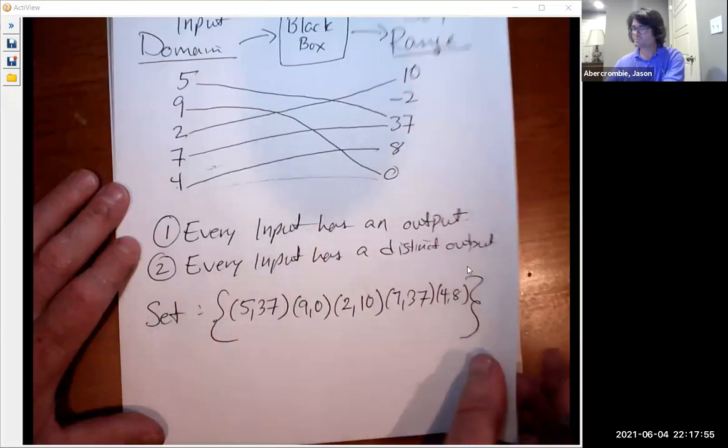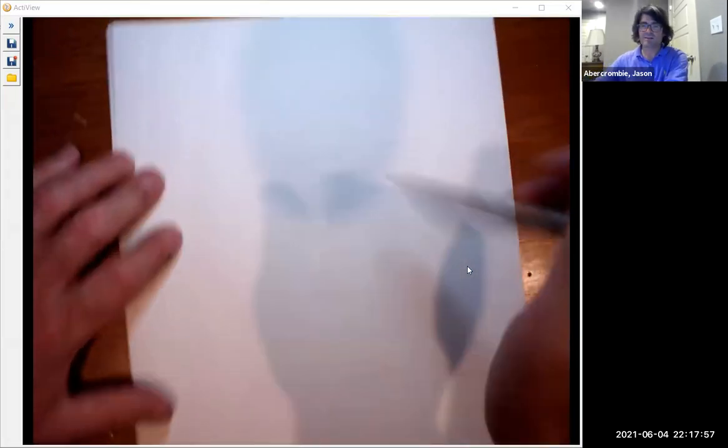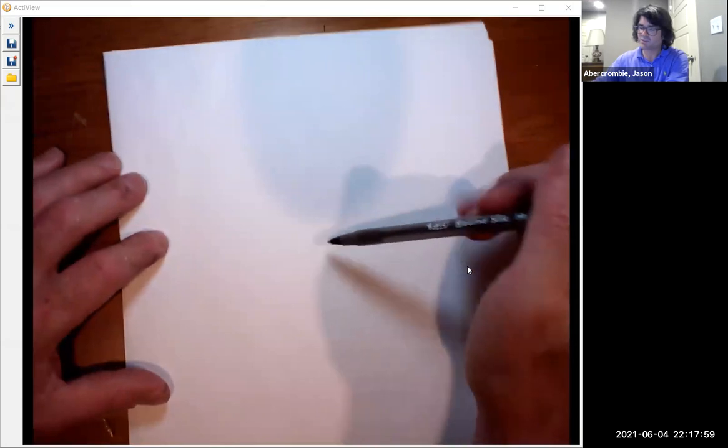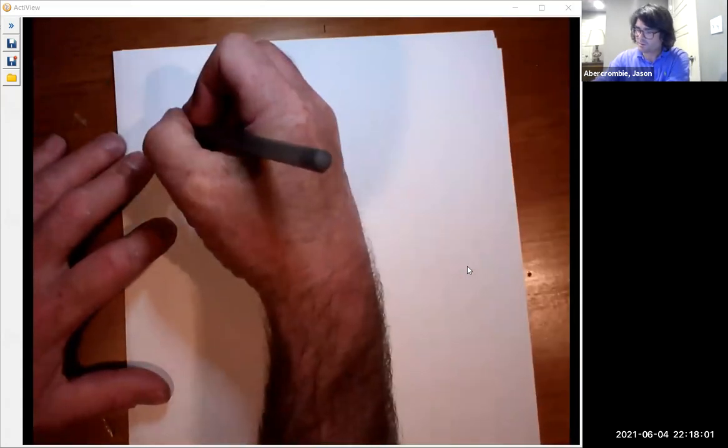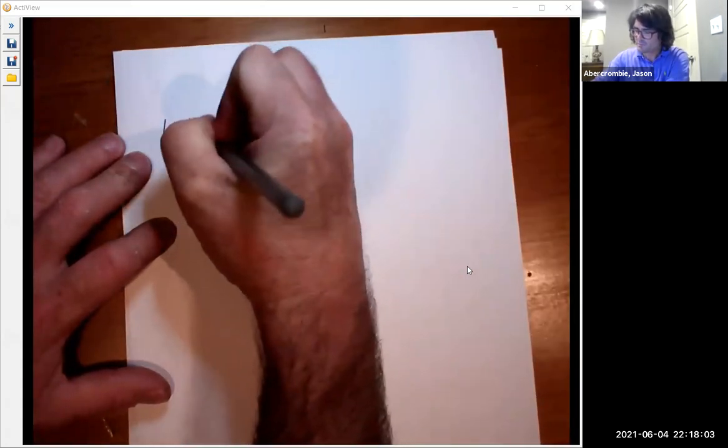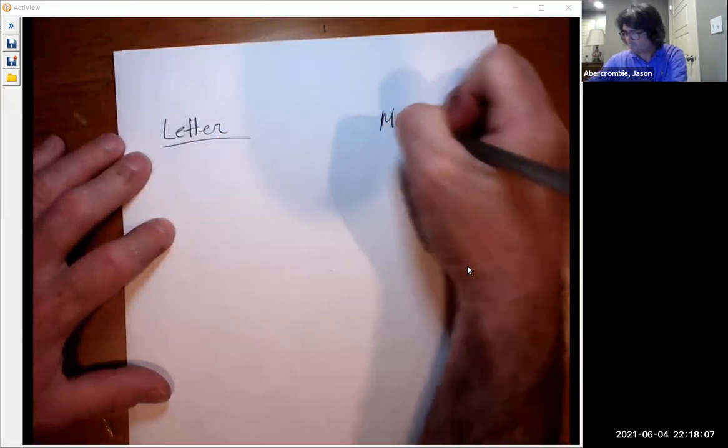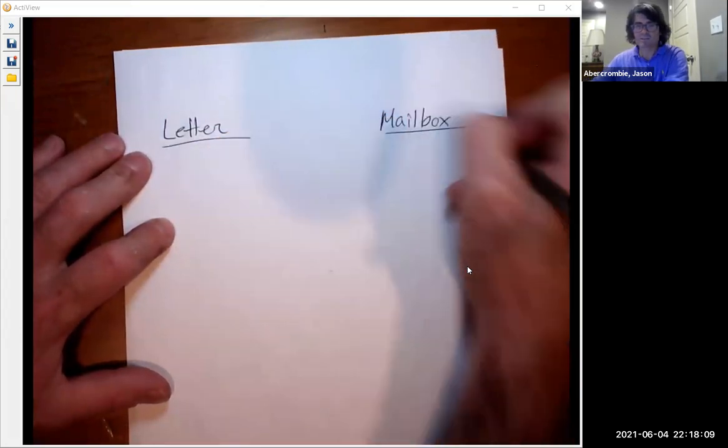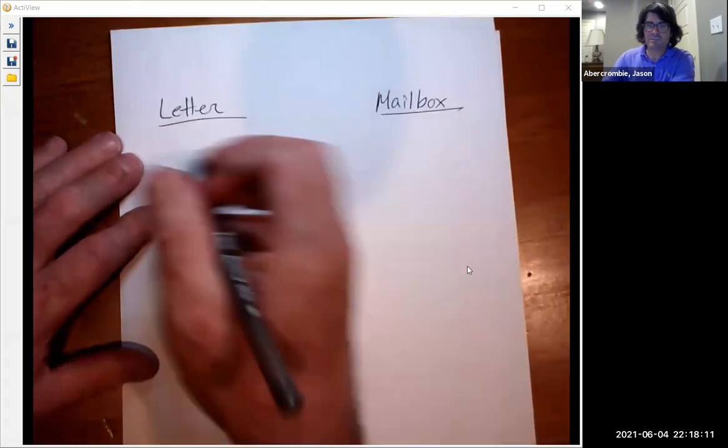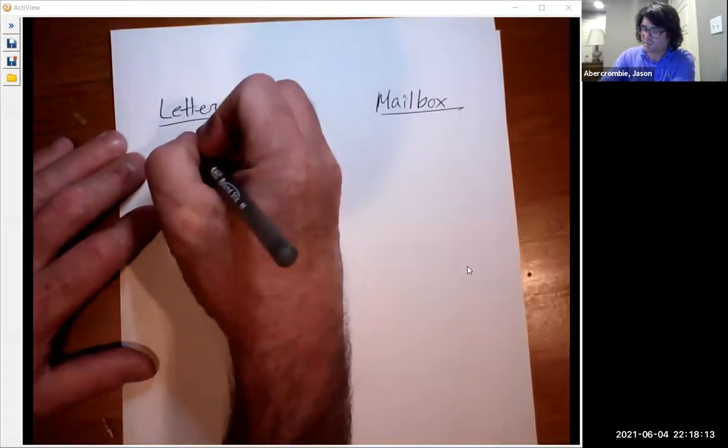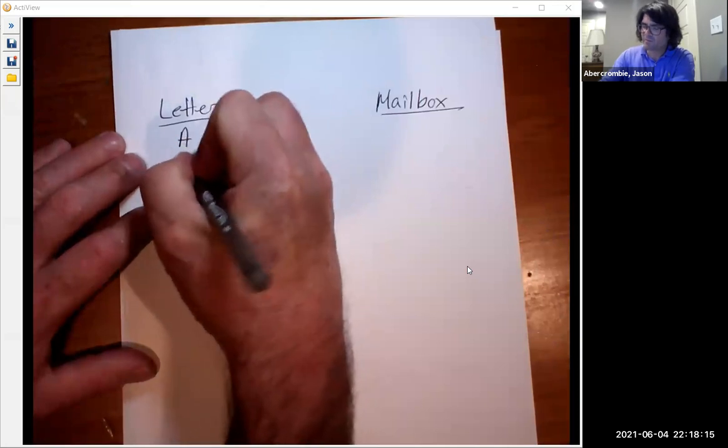So let me show you an analogy that might help with this. It's the letter and mailbox analogy. So let's just name some letters: A, B. They don't have to be numbers.